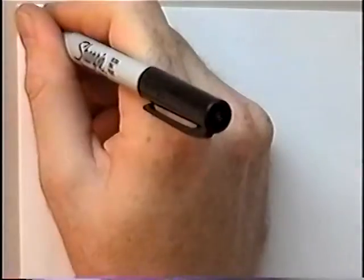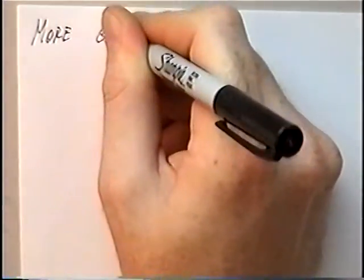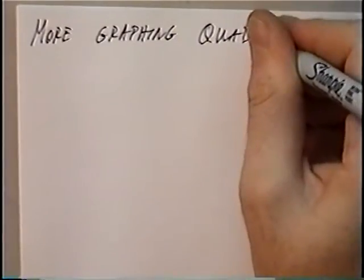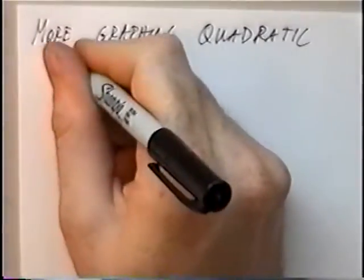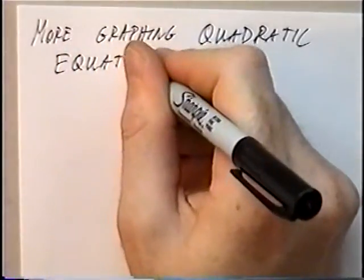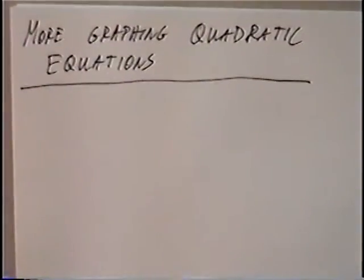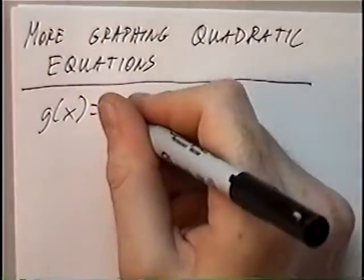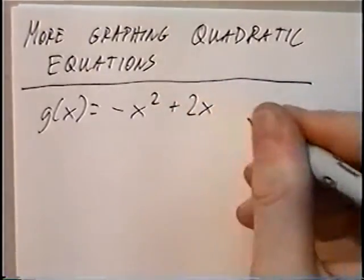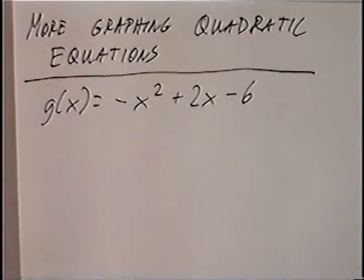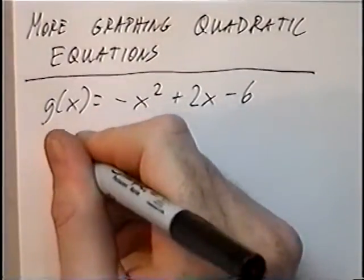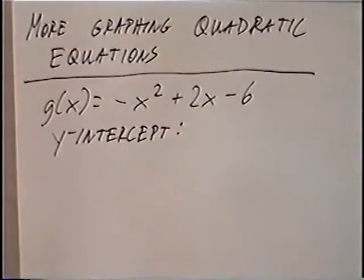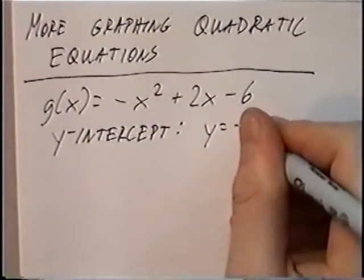The title of the next section is 'More Graphing Quadratic Equations.' The equation for this section is g(x) = -x² + 2x - 6. The first information we can find is the y-intercept, which is the last number: y equals -6.